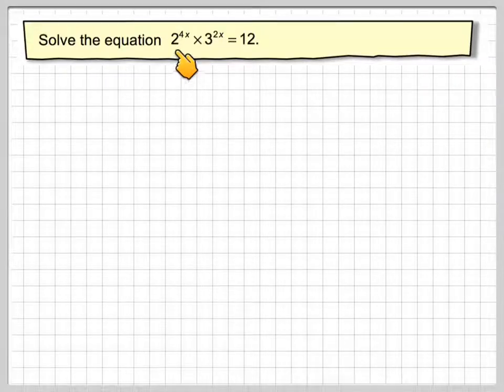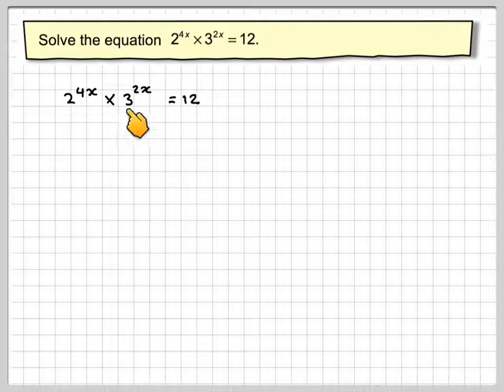Solve the equation: 2 to the 4x times 3 to the 2x is equal to 12.